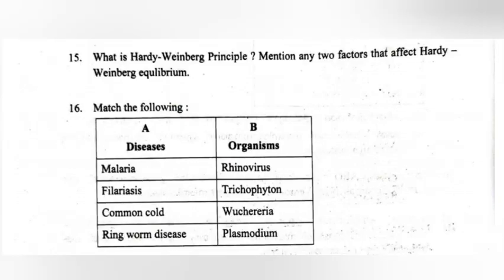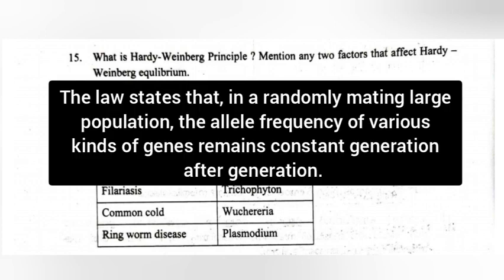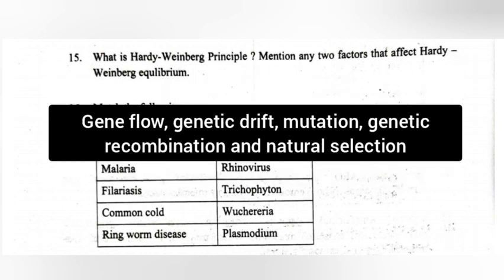15. What is the Hardy-Weinberg principle? Mention any two factors that affect Hardy-Weinberg equilibrium. Answer: The law states that in a randomly mating large population, the allele frequency of various kinds of genes remains constant generation after generation. Factors affecting it are: gene flow, genetic drift, mutation, genetic recombination, and natural selection.